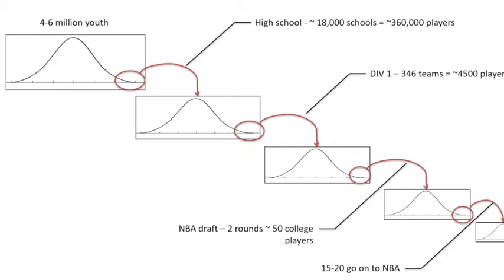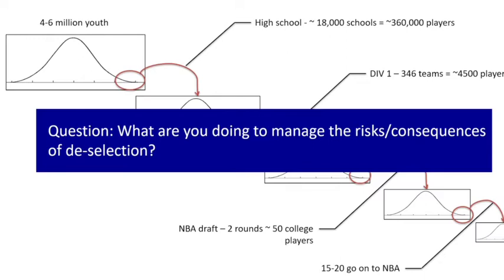We spend a lot of time and money focusing on later steps in the development pathway, but the more important steps are early on, where we're losing massive numbers of kids. We could be forgiven for that if we were great at making selection decisions. But those decisions, even when we wait until later in development, are not very accurate. Given how important the consequences of deselection are, how are you managing those risks — not just for the athletes staying in your system, but for the ones having to leave? Those are the ones we rarely follow up with.